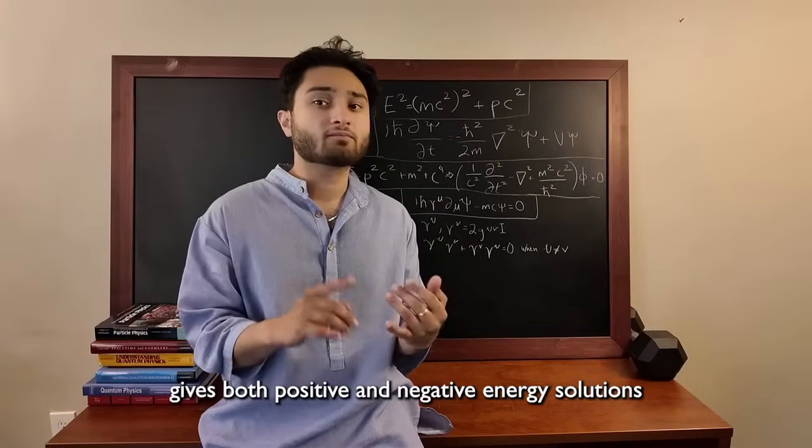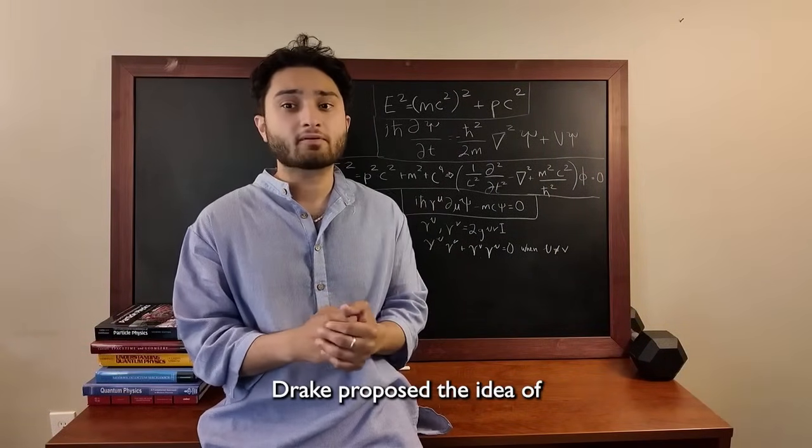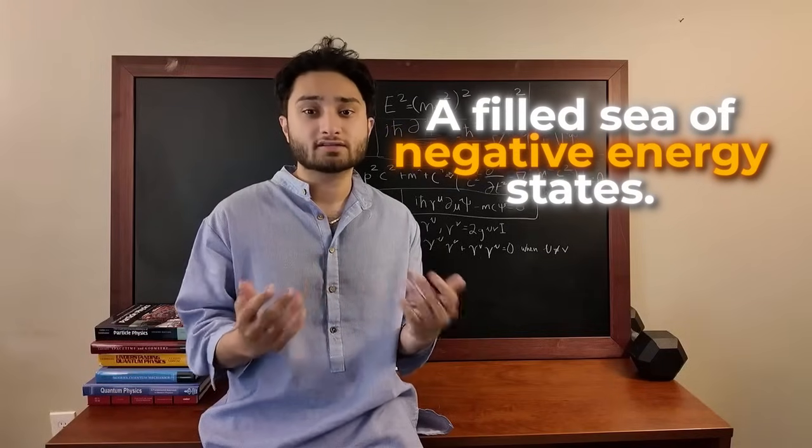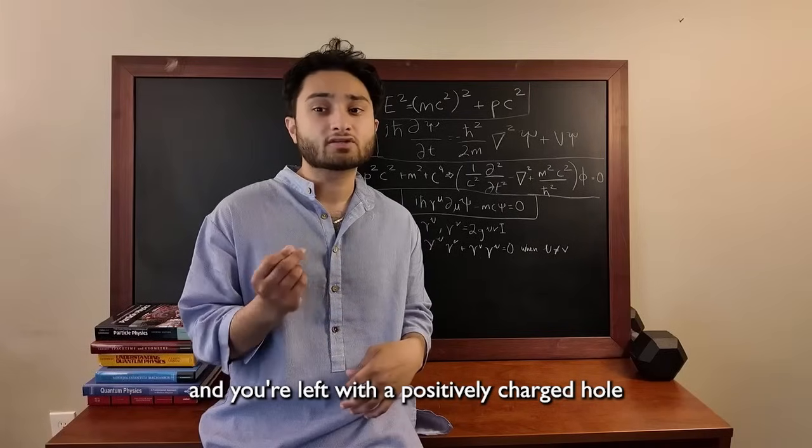Solving the Dirac equation gives both positive and negative energy solutions, which is weird, so to fix it, Dirac proposed the idea of a filled sea of negative energy states. Knock an electron out, and you're left with a positively charged hole,